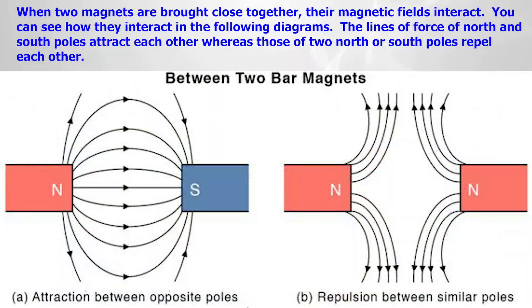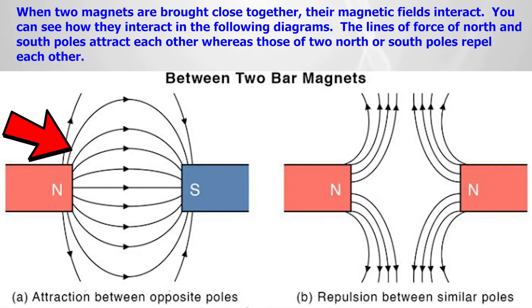When two magnets are brought close together, their magnetic fields interact. You can see how they interact in the following diagrams. The lines of force of north and south poles attract each other, whereas those of two north poles repel each other.